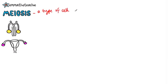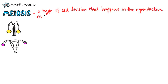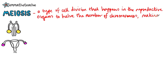Meiosis is how gametes are made. Let's look at the definition. Meiosis is a type of cell division that happens in the reproductive organs to halve the number of chromosomes, making gametes. So it happens in the testes and the ovaries.